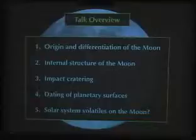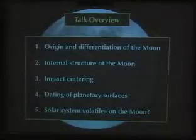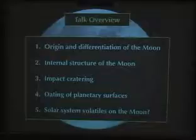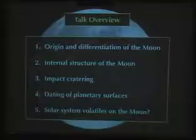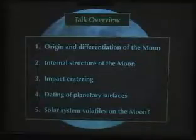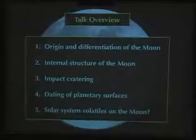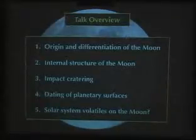So this is just briefly the overview of this talk. It's going to be divided into five parts; if I don't have time, I'll skip the last one. The first part I'd like to talk about is the origin and early differentiation of the Moon. Secondly, I'd like to talk about what geophysics has to offer us in terms of studying the internal structure of the Moon. Thirdly, I'd like to talk about impact craters — the processes and what craters look like on the Moon. Then I'll show how we can use craters to date the surfaces of planets. And if I have time, I'll talk about the evidence for ice near the poles of the Moon.